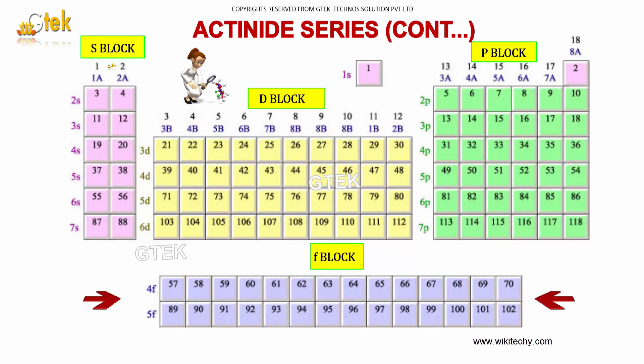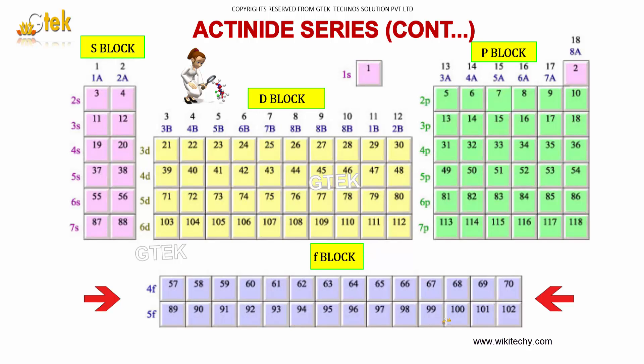So actinide — S block, this one is D block, P block and F block. This one is lanthanide and this one is actinide.